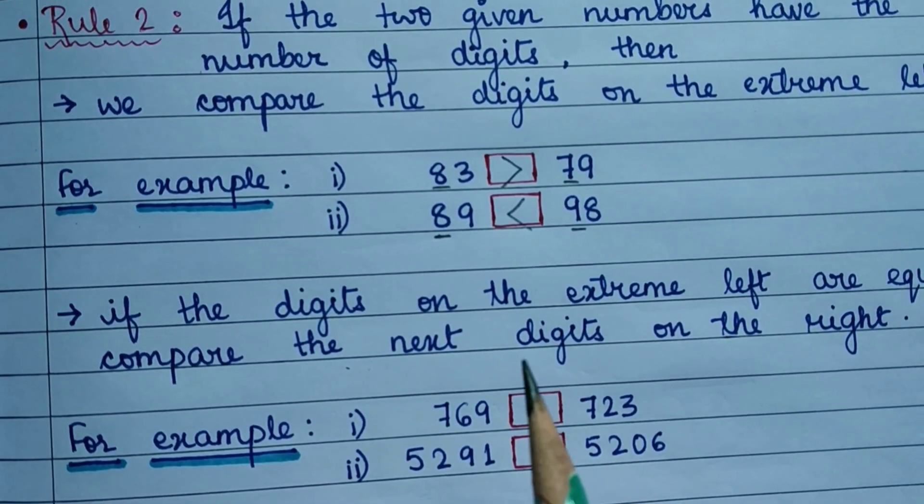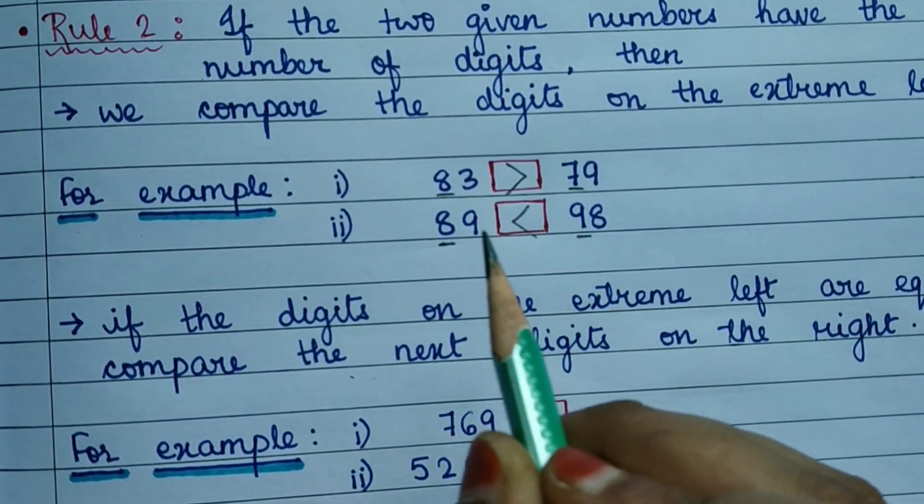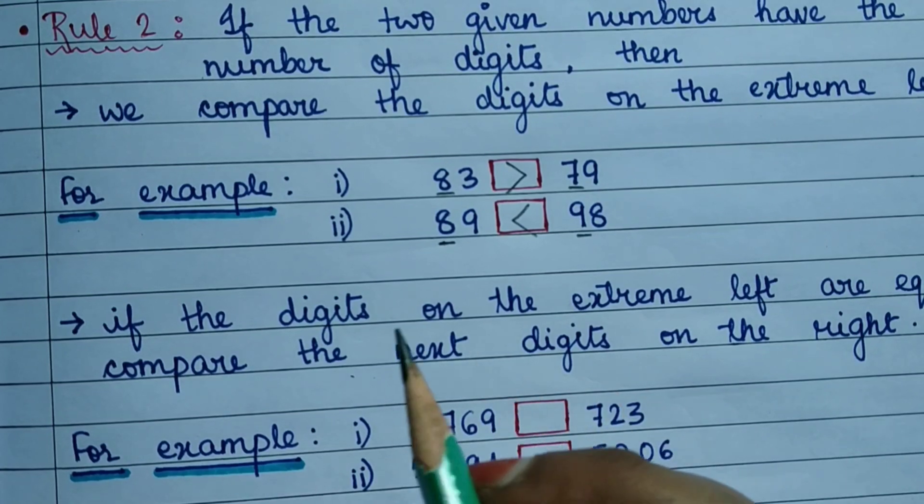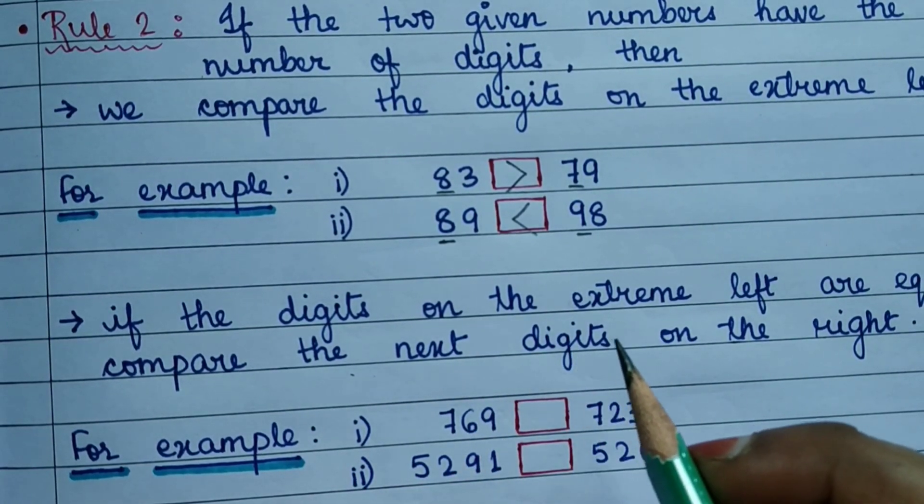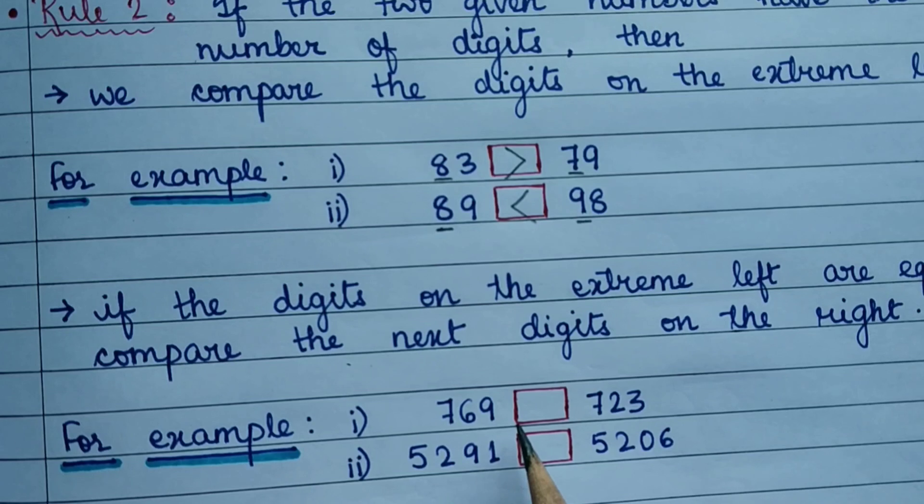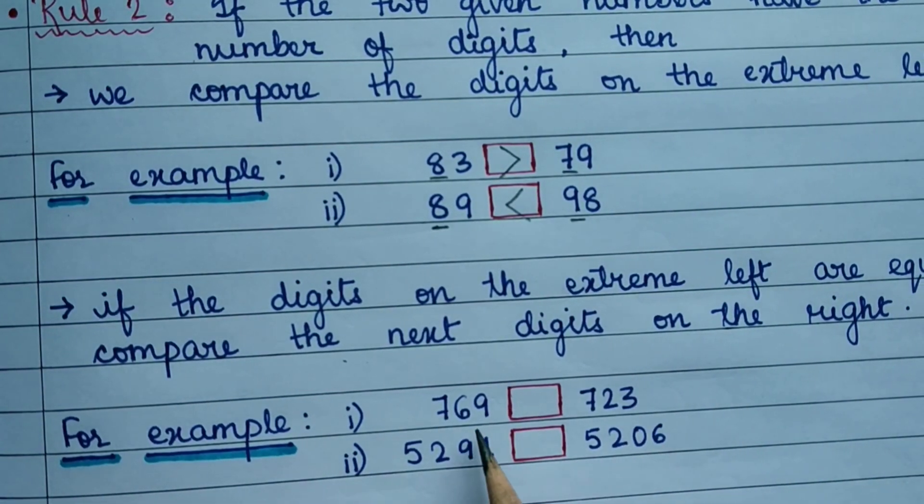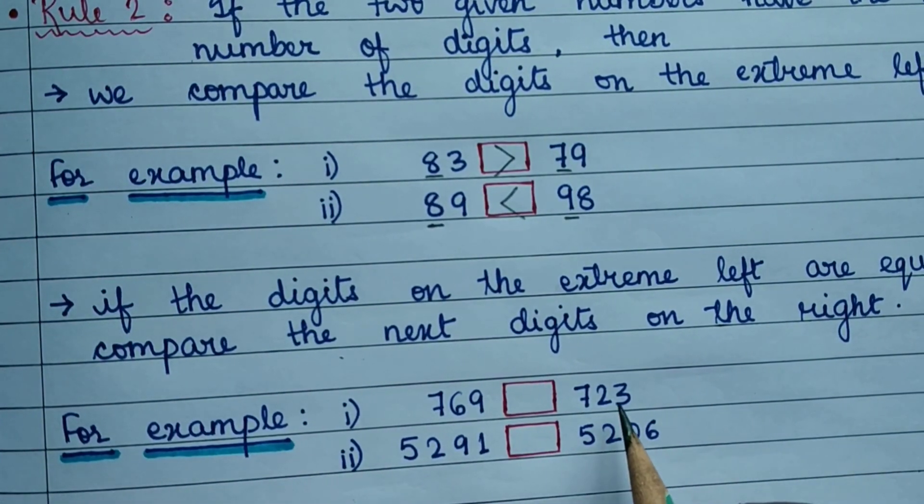But if the digits on the extreme left are equal, then we will compare the next digits on the right. For example, here, since these two numbers have the same number of digits...